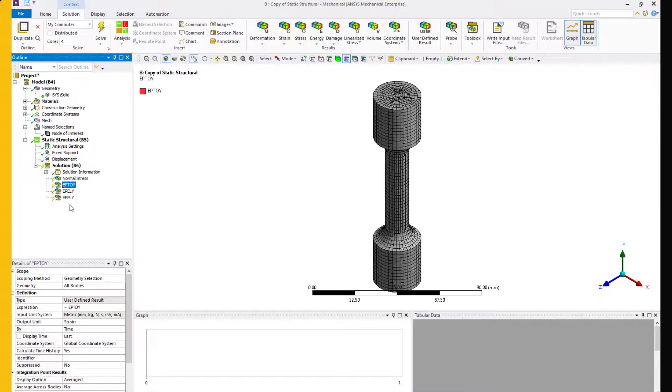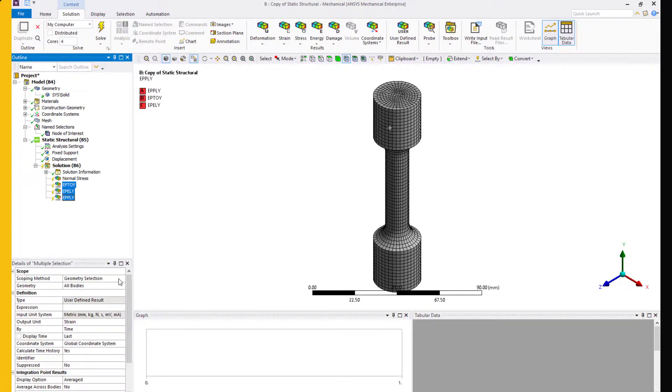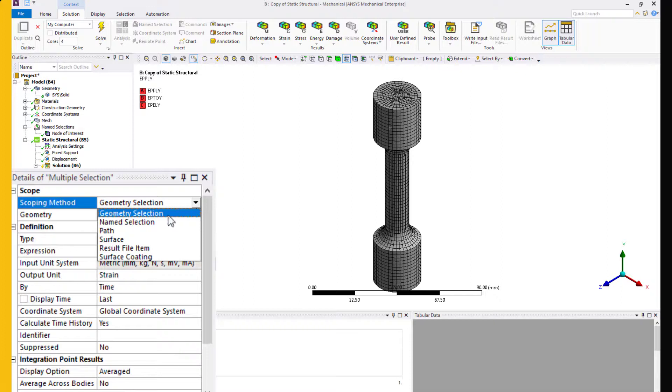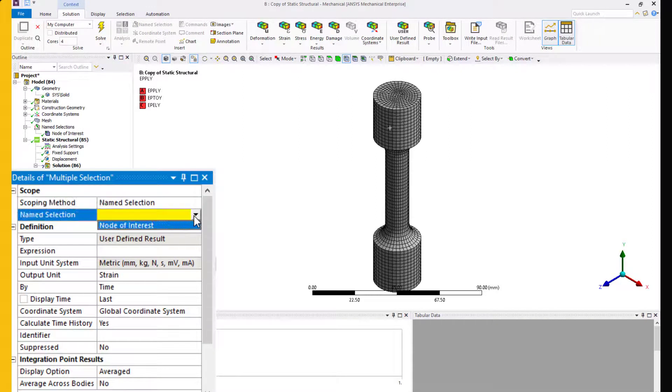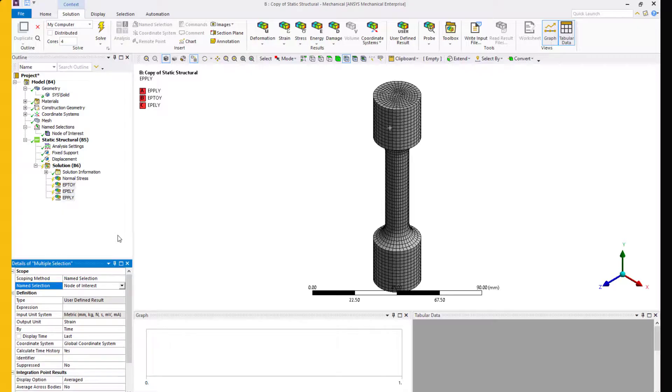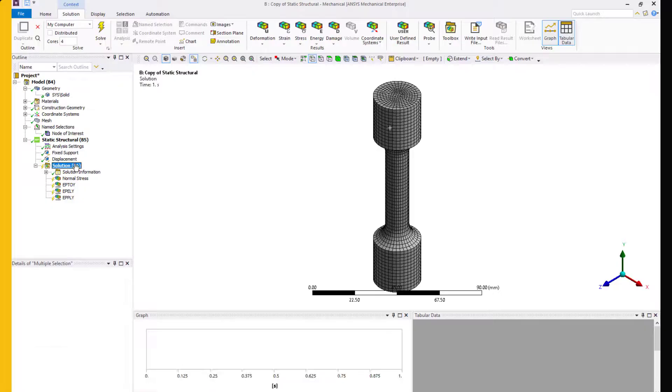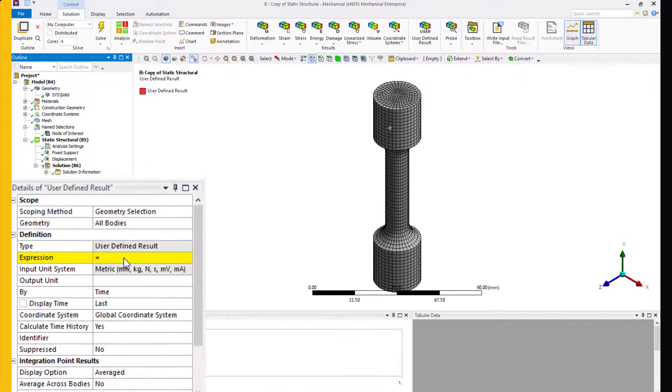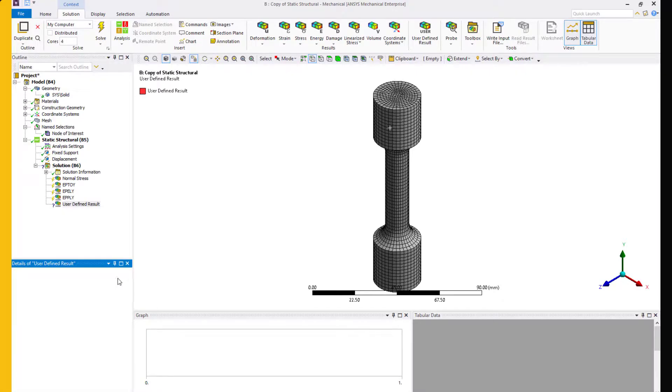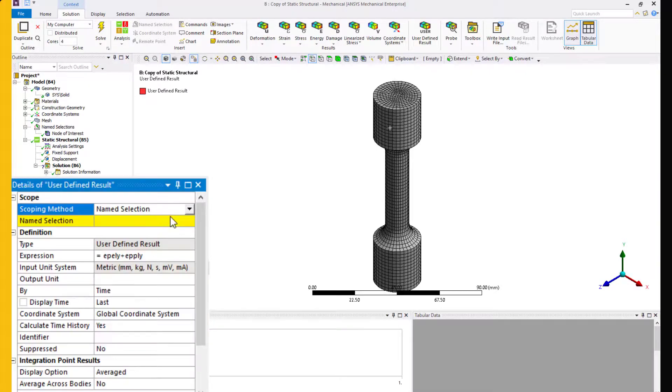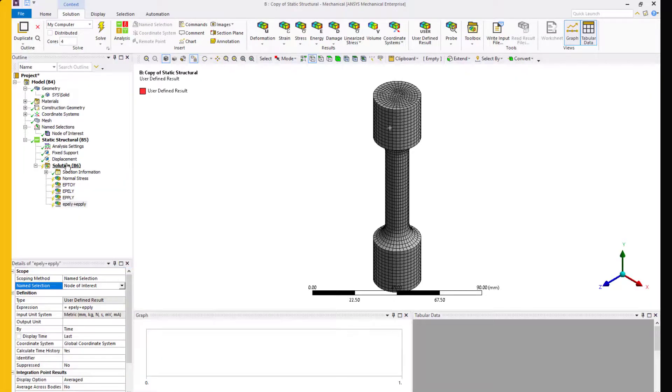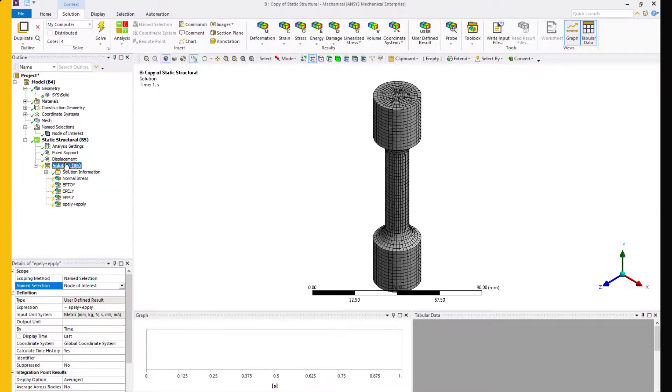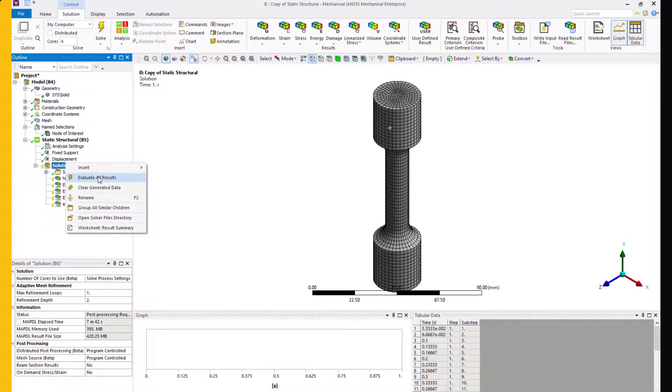While we are here, let's also insert an object to plot the total elastic and total plastic strains in Y direction. Next, select all of them and change the scoping to the nodal name selection. Let's define one final item before we evaluate these results. Insert a new user-defined result and in the expression, add EPELY plus EPPLY. By doing so, we're summing up the total elastic and plastic strains. So based on our discussion earlier, these quantities should add up to the total strain. Let's evaluate these results and see if that's what we'll get.